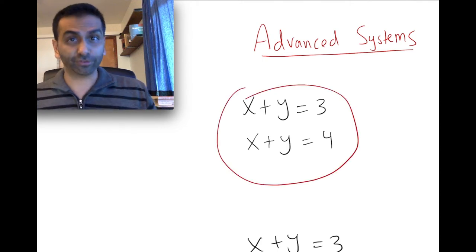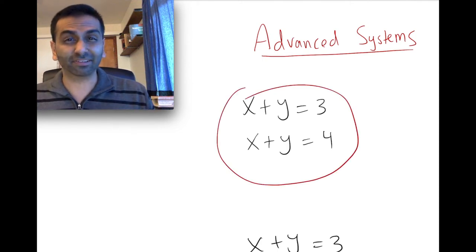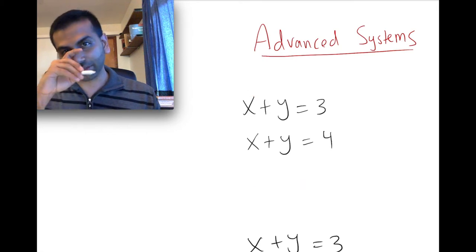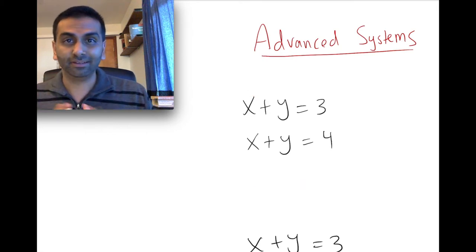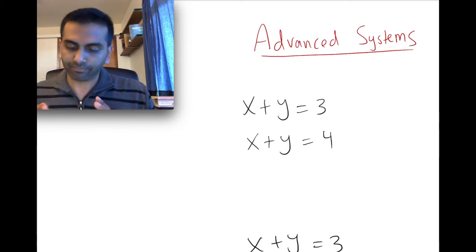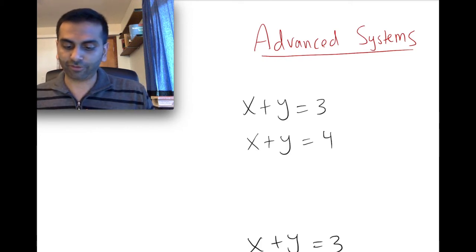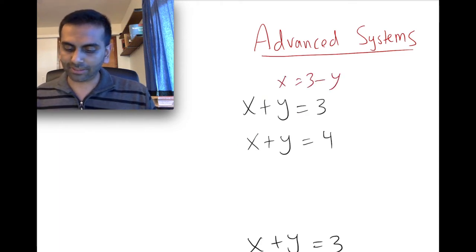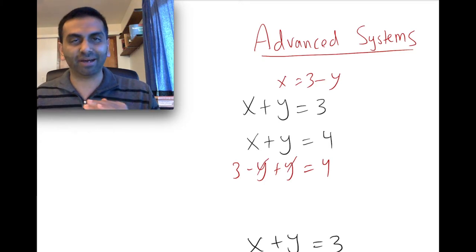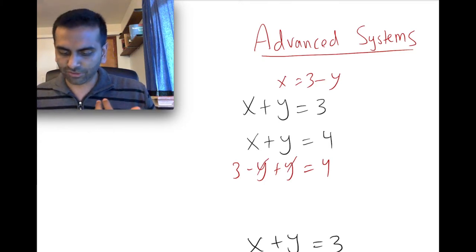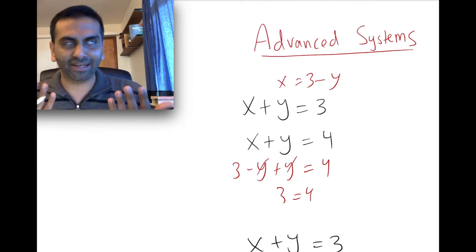x plus y equals 3 and x plus y equals 4. Now if you were to try to use substitution and solve it, it basically won't work. If you were to solve for x, you get x equals 3 minus y, and you plug that in: 3 minus y plus y equals 4. The y's cancel — minus y plus y is zero — so you're left with 3 equals 4. But we know that 3 doesn't equal 4.